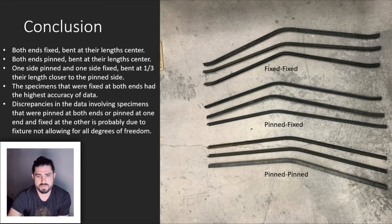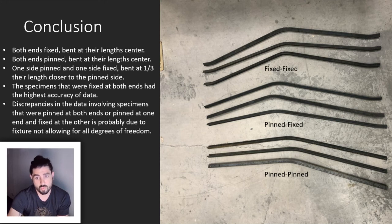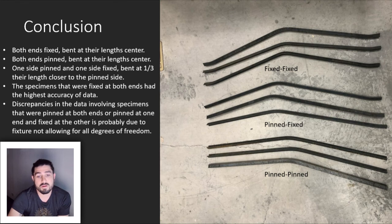The discrepancies with the specimens that were pinned to fixed, or pinned and pinned, was most likely associated with the fact that our fixture did not allow for all degrees of freedom. As a result, torsional bending occurred in the fixture and the bending in the specimen was slightly off from the calculated moment of inertia's bending axis.